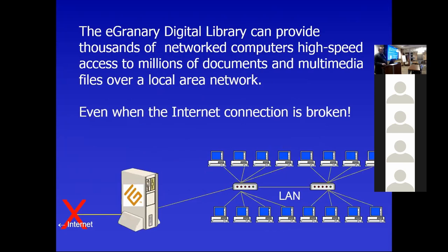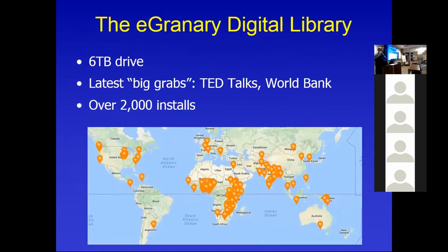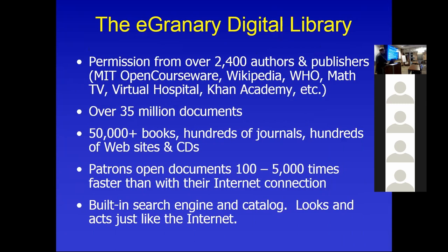We're at a six-terabyte drive, over 2,000 installations around the world, and we're in 27 prisons here in the US as well — there's another group of people who can't be on the internet. Some of them are there because they were on the internet, so they have their own offline internet. On top of a lot of open source material, we've also gotten permission from over 2,400 authors and publishers. We just contact them and say: 'The bulk of the world can't see your website — can we make a copy?' And most people agree.